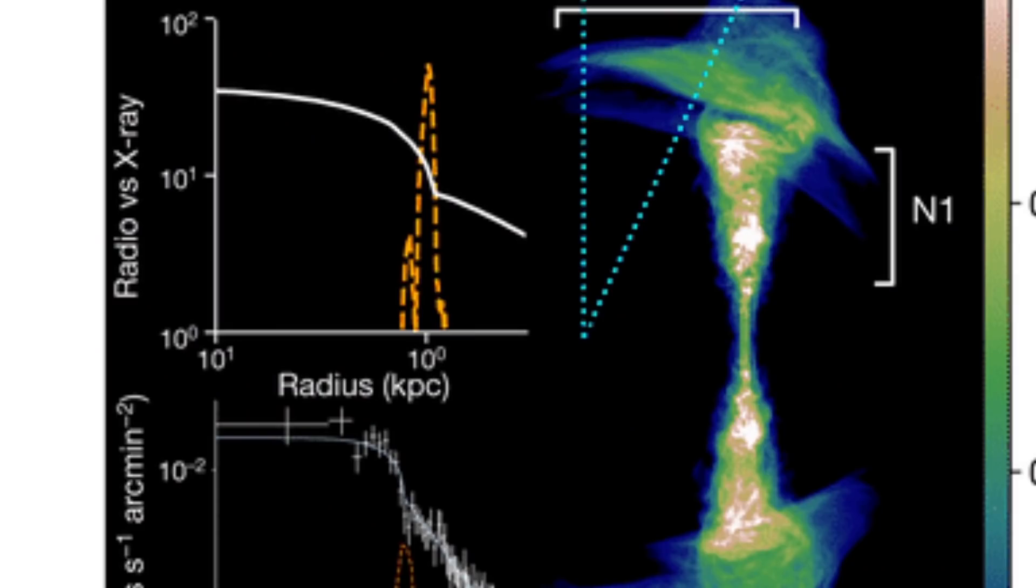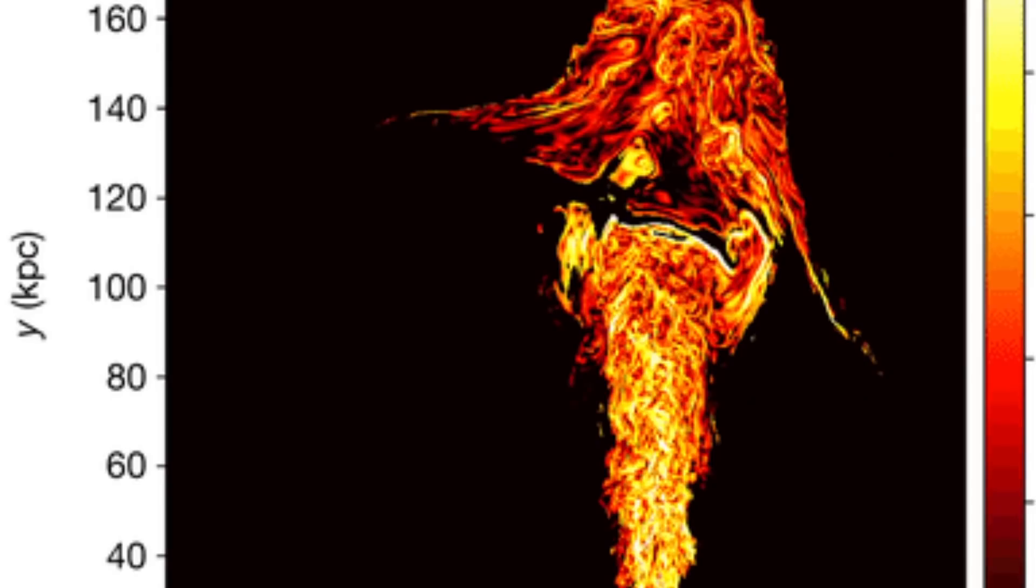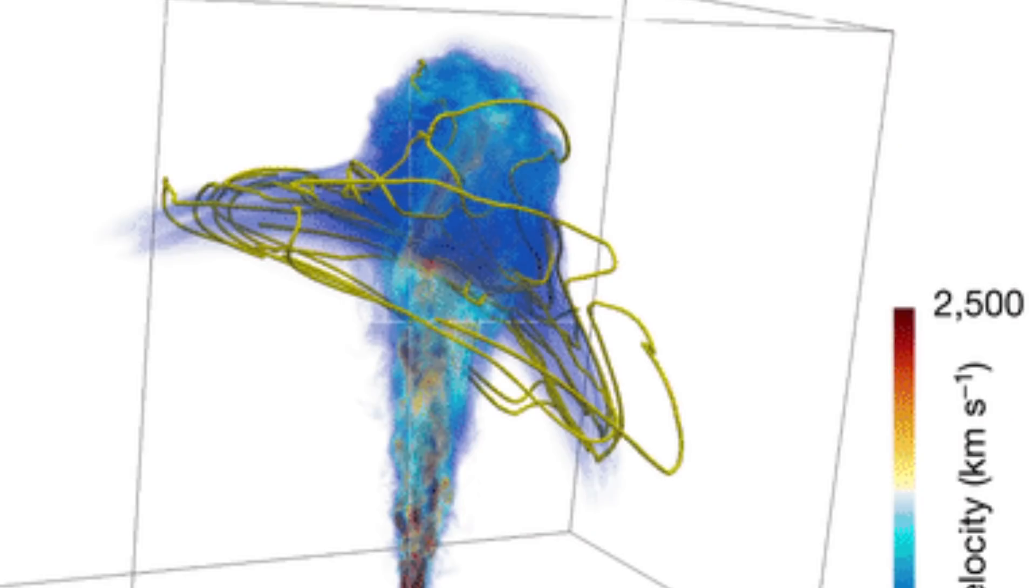And by using the supercomputer known as Aterui 2, which is the most powerful astronomical calculations supercomputer, they were able to create a model that more or less showed them what most likely happens in this jet and how this jet is very likely affected by the magnetic field between the galaxies.